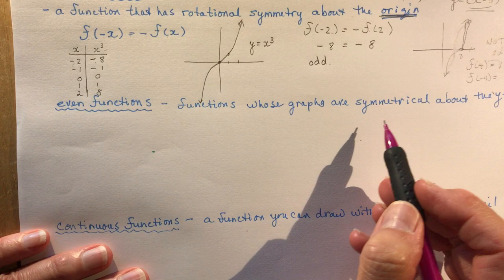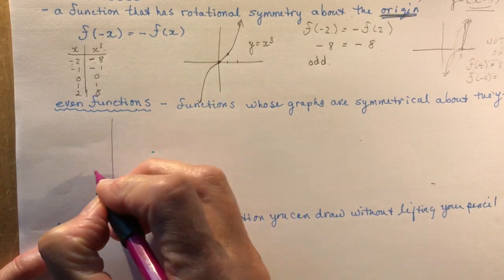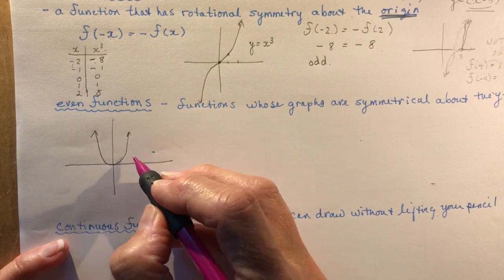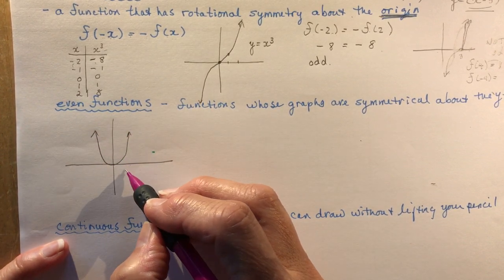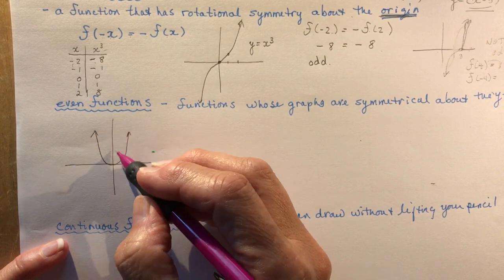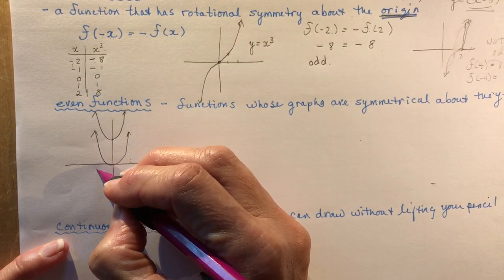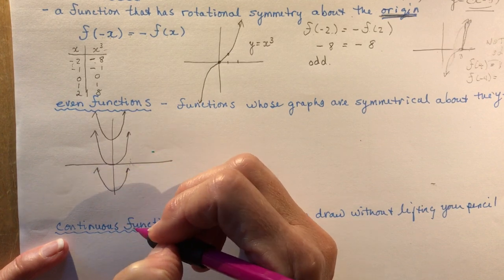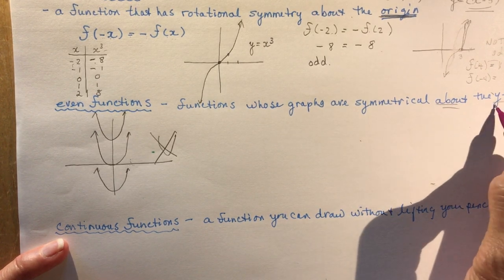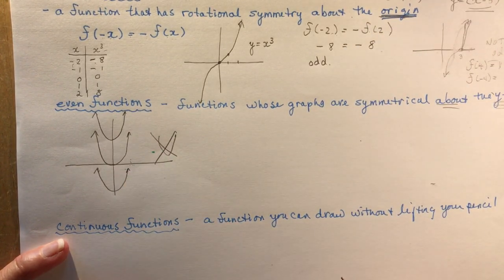Even functions are functions whose graphs are symmetrical about the y-axis. A parabola has line symmetry, so it is an even function. It would only remain even if the only transformation applied is a vertical shift — moving it up or down. If you move the parabola over horizontally, it would no longer be even because it's not symmetric about the y-axis. So for even and odd functions: even requires symmetry about the y-axis, and odd requires symmetry about the origin.